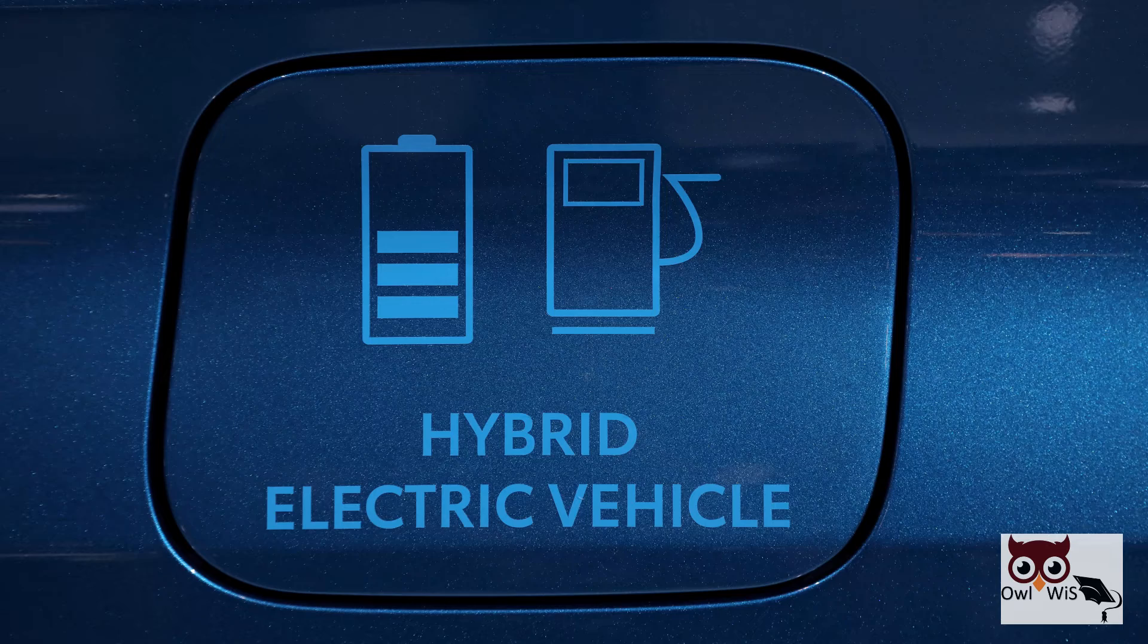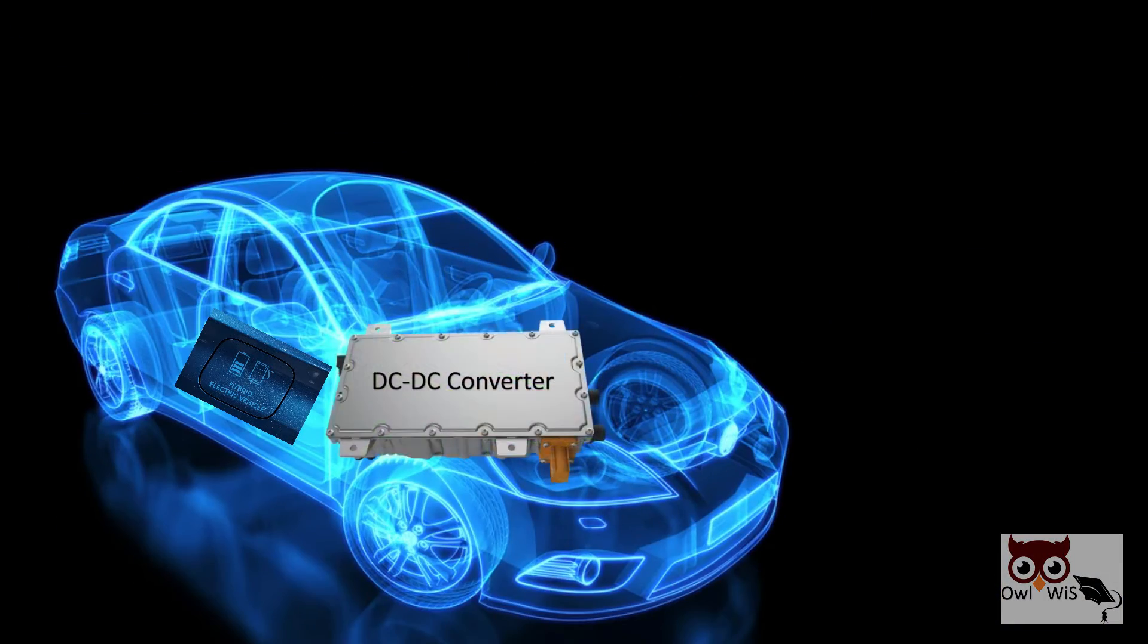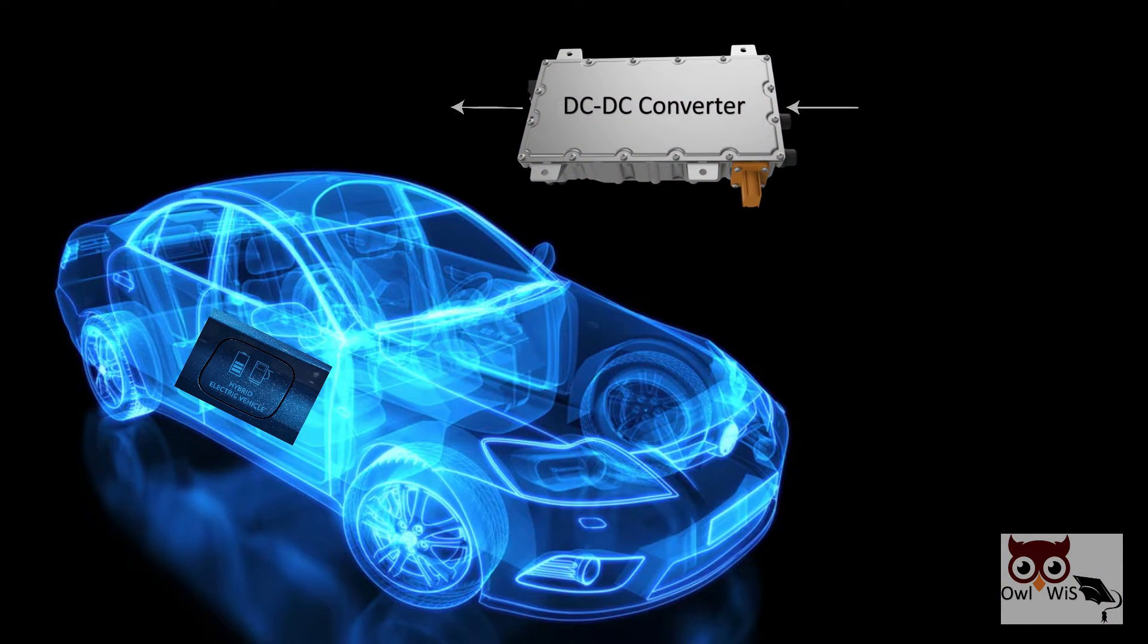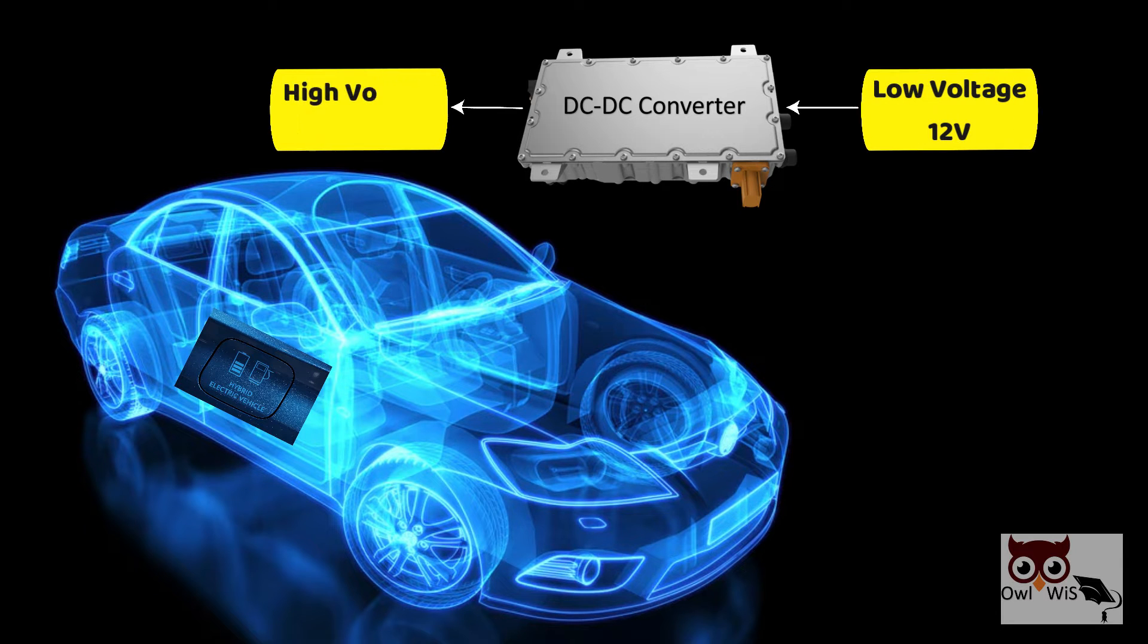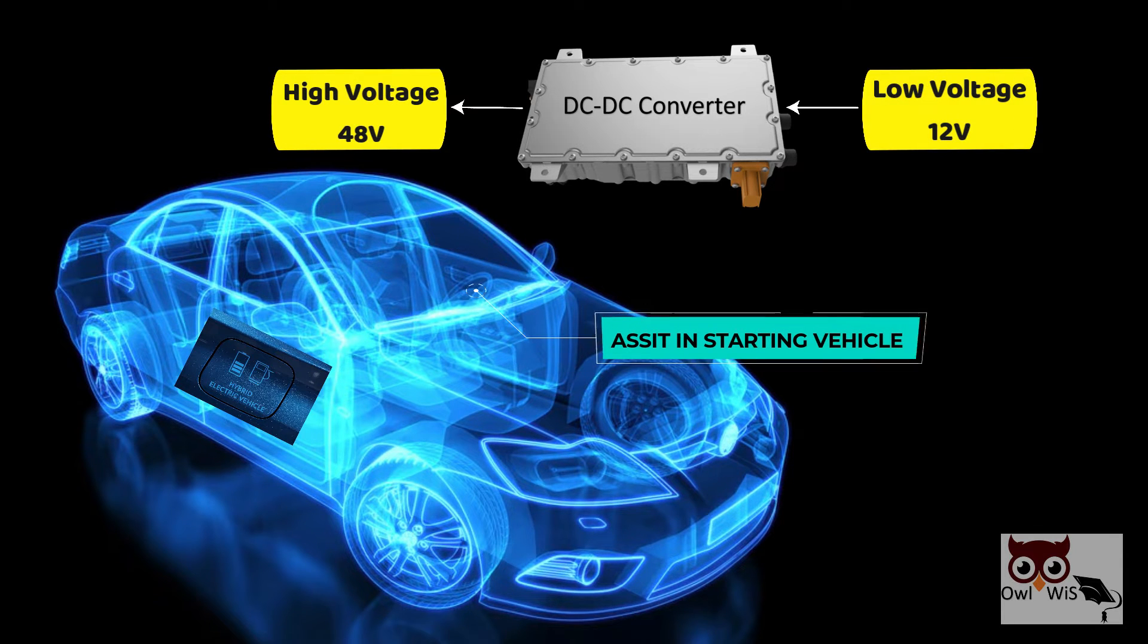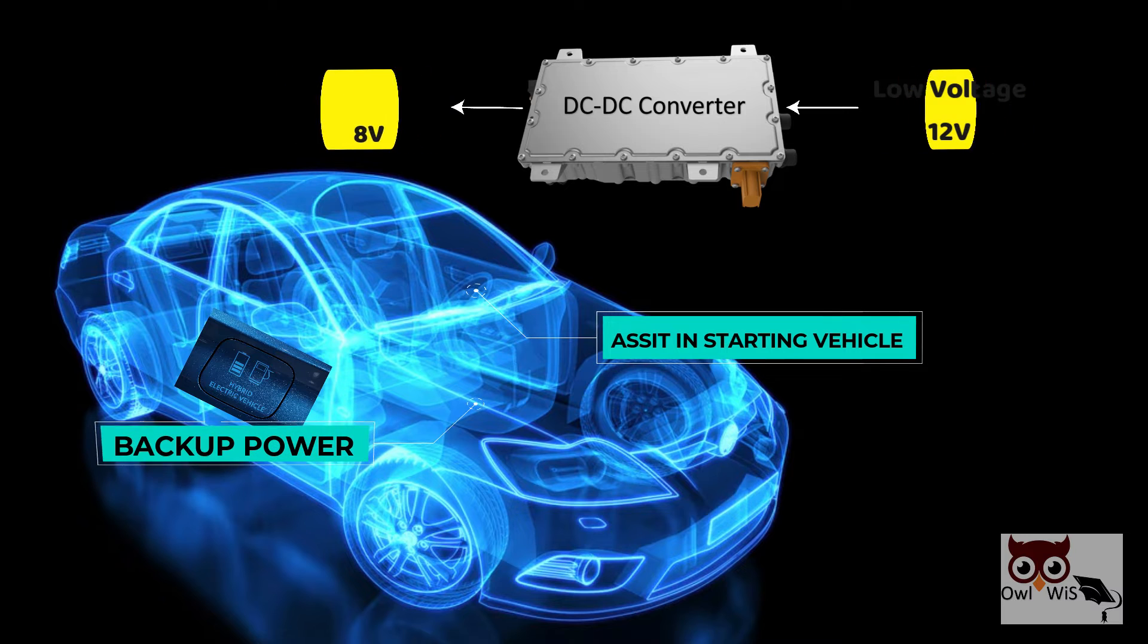In some applications, like a hybrid electric vehicle (HEV), the DC-DC can be run in reverse to boost the power from 12 volts to 48 volts to assist in starting the vehicle or to provide backup power. This requires the DC-DC converter to have bidirectional capability.